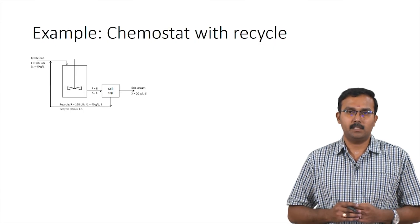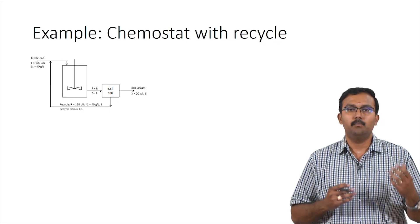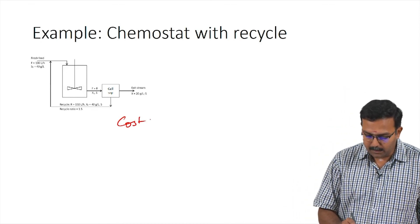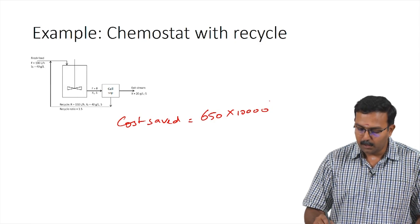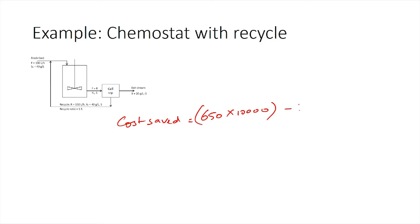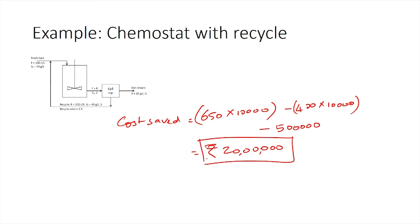For Setup 1 the reactor volume was 650 liters; for Setup 2 with recycle it is 400 liters, representing significant cost savings. The cost saved is (650 minus 400) times 10,000 rupees per liter, minus 5 lakh rupees for the cell separator, giving a total savings of 20 lakh rupees. By using the cell separator and recycle stream, the company saves 20 lakh rupees just for the installation. There will be additional savings from operational costs as cells are recycled. With this we conclude the review of the basic aspects of material balances.